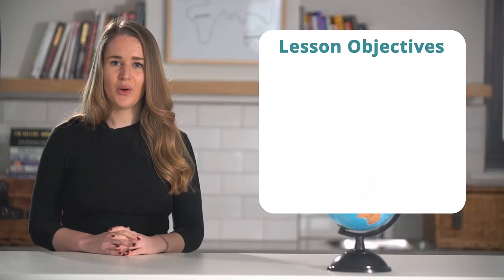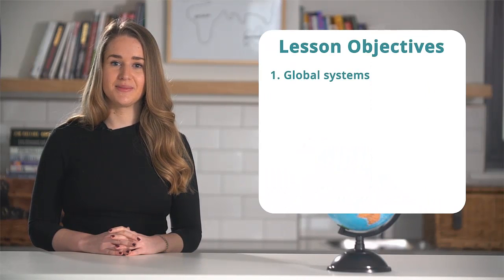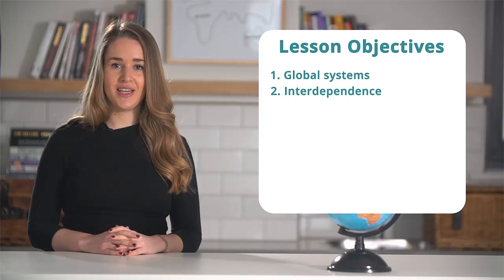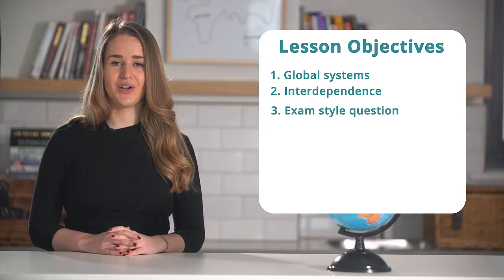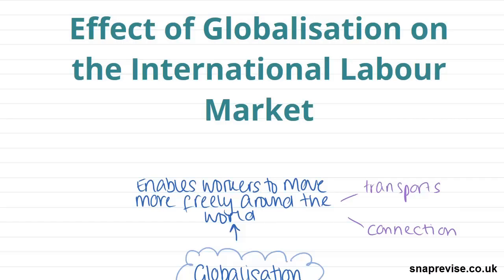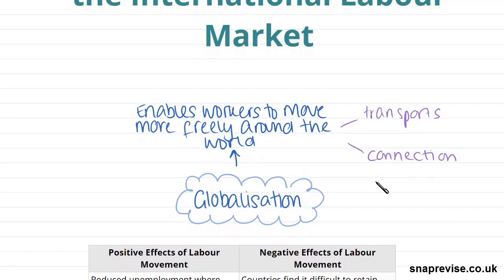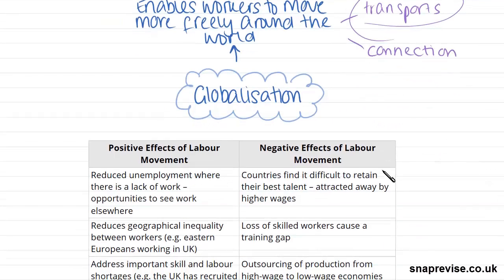Hi guys, in this video we will be learning about global systems and understanding the issues associated with interdependence, finishing off with an exam style question. Firstly, we're going to look at the effects of globalisation on the international labour market. Labour simply means people moving for work — the workforce — and globalisation has enabled workers to move across the world more freely, due to improvements in transportation and connections such as the internet and mobile phone services.